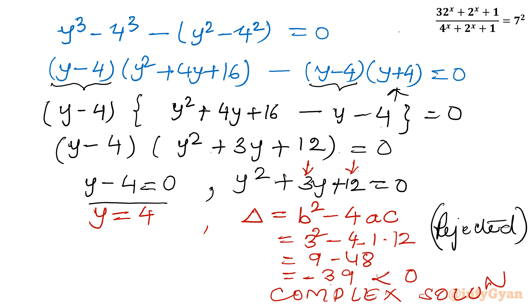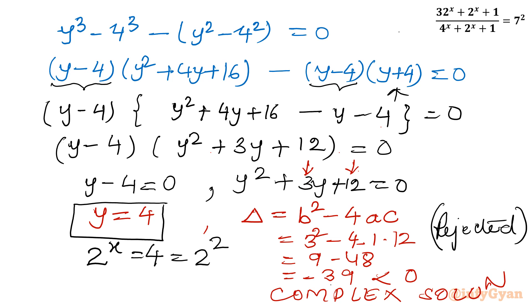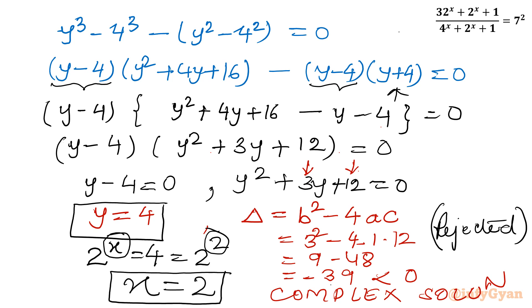We accept y = 4. Since y was our substitution for 2^x, we have 2^x = 4 = 2², and since the bases are identical the exponents must match, so x = 2. This is our only real solution.